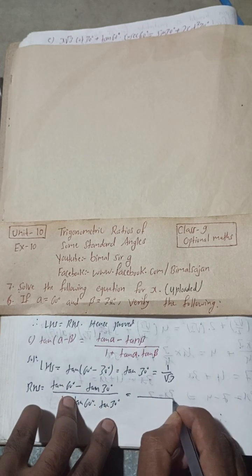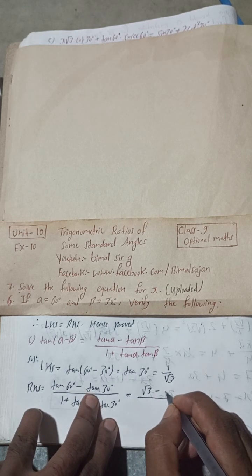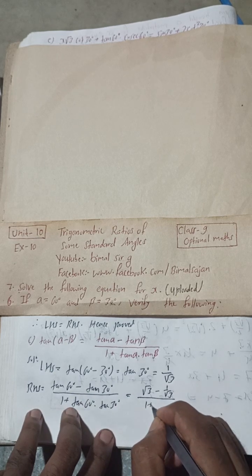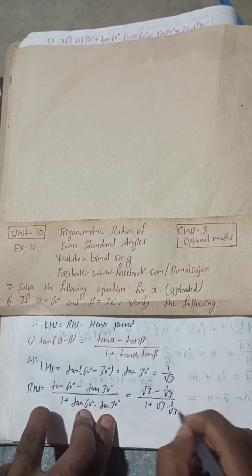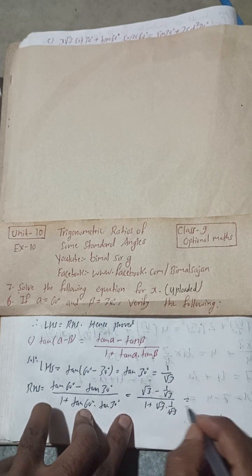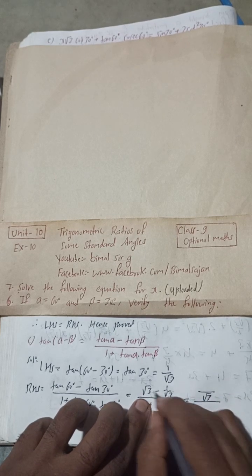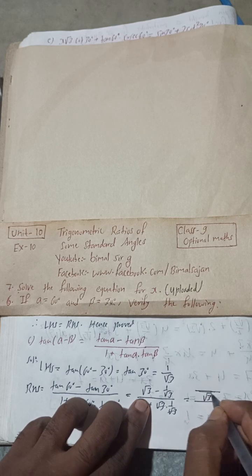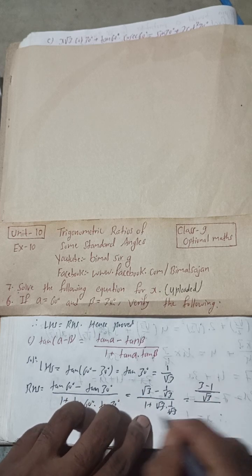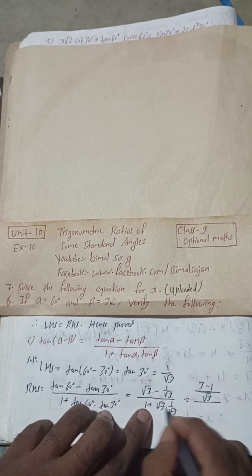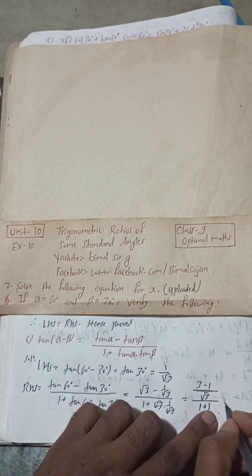Tan 60° is written as root 3, minus tan 30° which is 1 by root 3, all divided by 1 plus tan 60° (root 3) into tan 30° (1 by root 3) — these cancel. Taking LCM as root 3 in the numerator: root 3 squared is 3, minus 1, over root 3. In the denominator, 1 plus 1 equals 2.